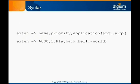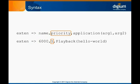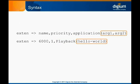The syntax for defining an extension may at first look cumbersome, but it's actually quite simple. The letters e-x-t-e-n appear first, followed by the equals-greater-than operator, to indicate that we're defining an extension. Next comes the extension name and a comma. Next is the dial plan priority, which tells Asterisk in what order to execute the actions for this extension. This is followed by another comma, and then the dial plan application name. Any parameters to the application are listed in parentheses and separated by commas.